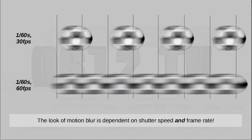Instead, in a context of video, a good measure of motion blur should take frame rates into account as well. This is where shutter angle actually comes into the picture.